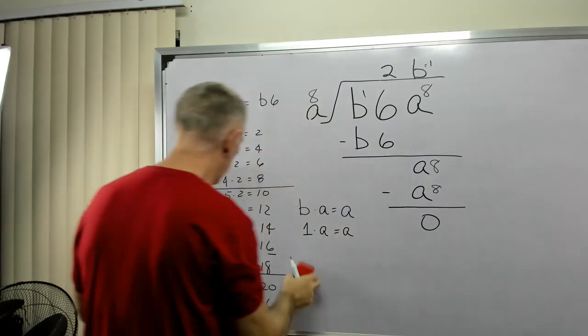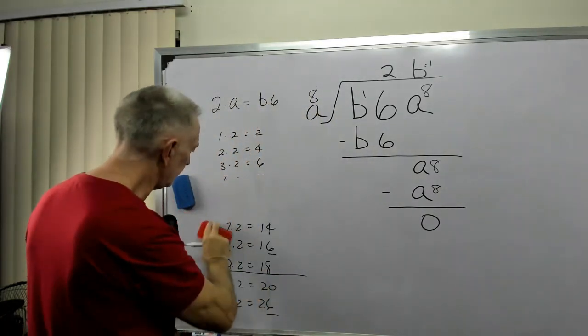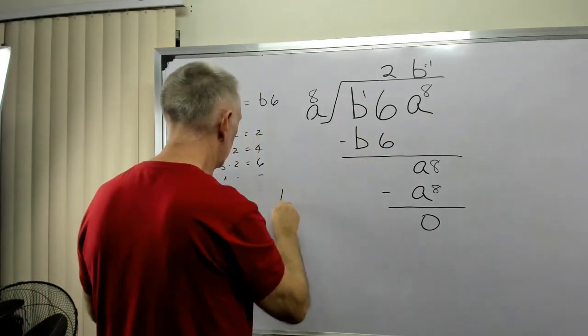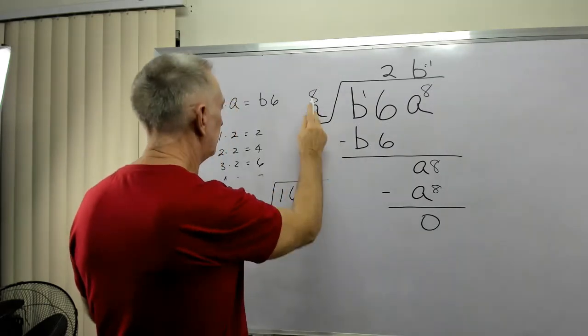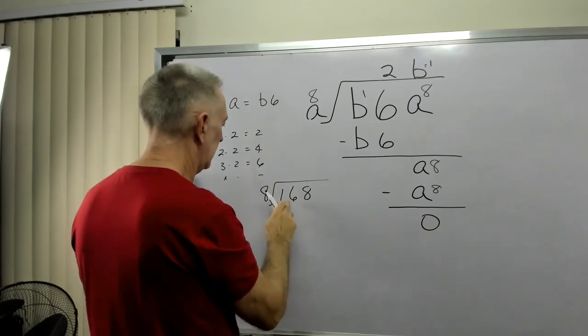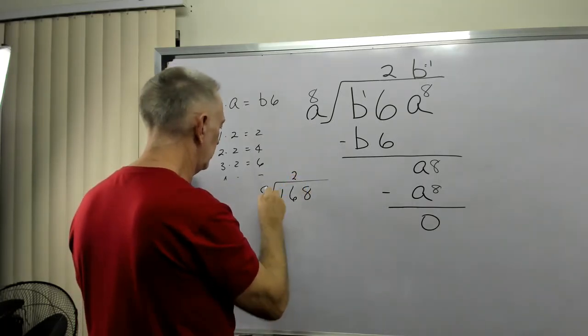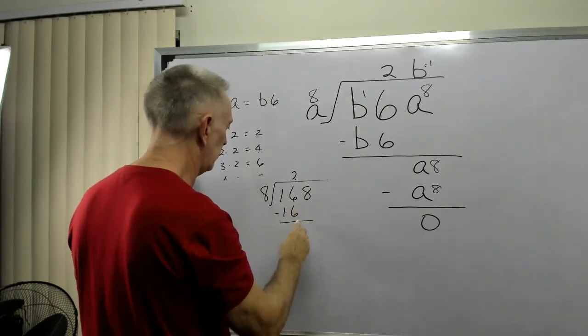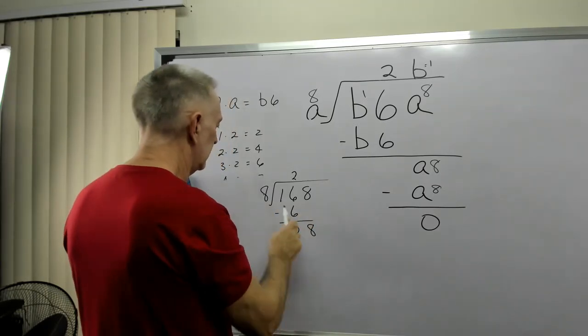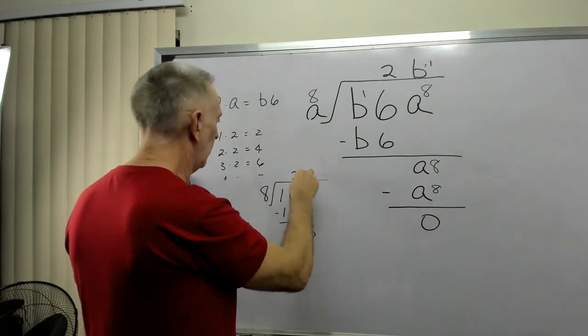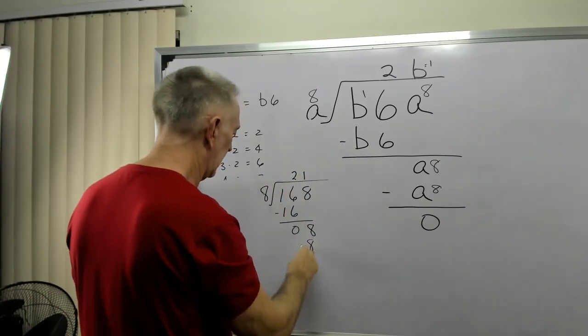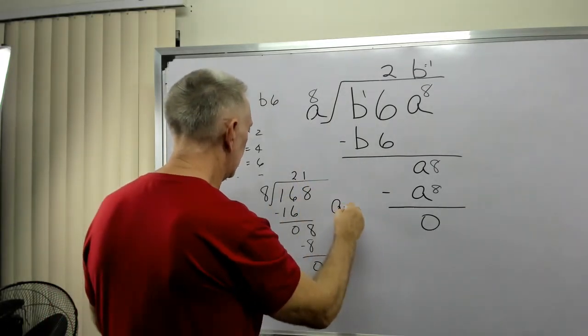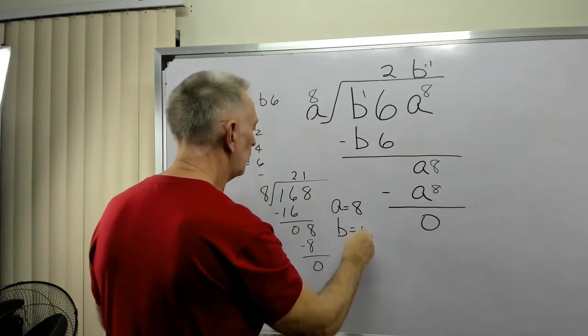So what does all of that give us? Let's see what we have here. We have 168 divided by 8. 16 divided by 8 is 2. 2 times 8 is 16. 16 minus 16 is 0. Bring down the 8. 8 will go into 8 one time. One time 8 is 8. 8 minus 8 is 0. So it appears to be that A equals 8, B equals 1.